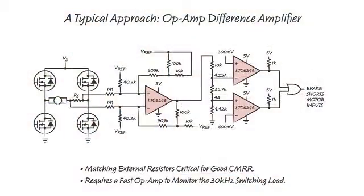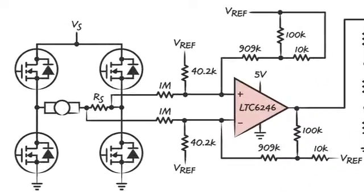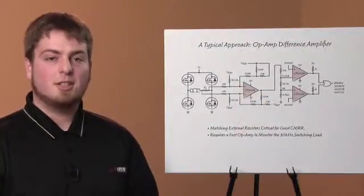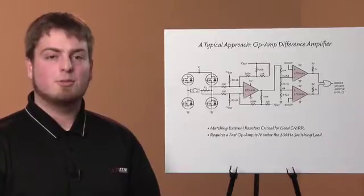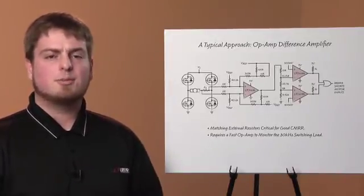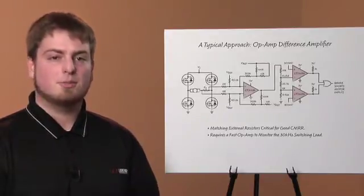For many people, the first thought for this application might be to use an op amp in a differential amplifier configuration, shown here. To monitor the bidirectional motor current and to stay within the op amp's common mode input range, the input signal will need to be attenuated and the amplifier's input will need to be biased off-ground. The amplifier used will also need a substantial gain bandwidth to provide adequate gain and to be able to monitor the switching currents in the H-bridge.